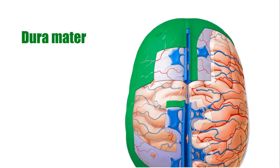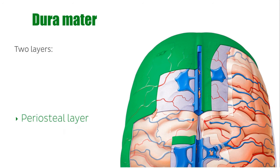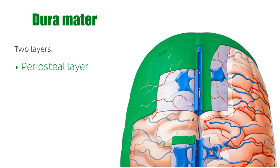The dura mater is derived from the mesoderm during embryonic development. It is comprised of two layers: the periosteal layer, the outer layer of the cranial dura mater, which forms the inner aspect of the skull.